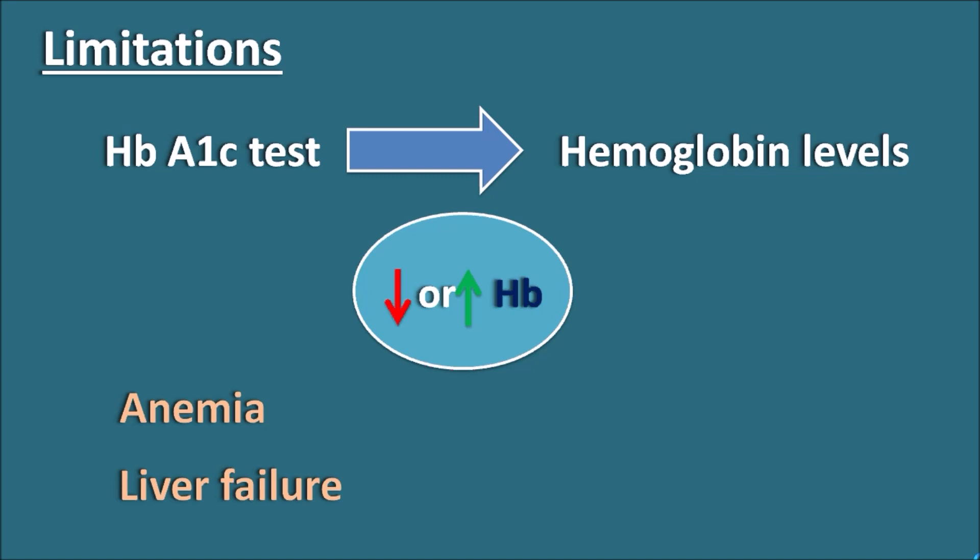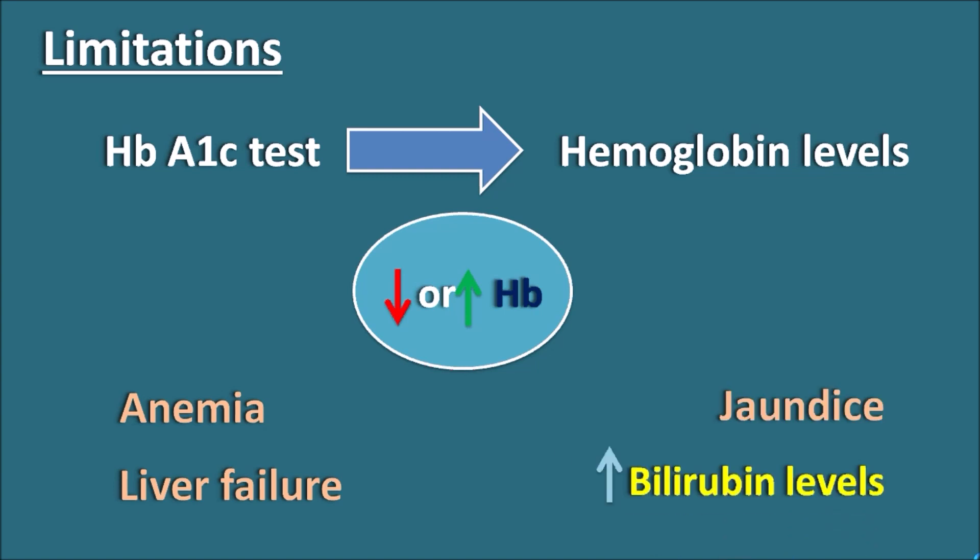Similarly, in conditions like jaundice where there are increased bilirubin levels, bilirubin can increase the HbA1c levels because it can also interact with glucose, thereby the total estimated glycated hemoglobin levels may be increased. So any of these factors may cause alteration of the HbA1c levels, which should be considered before going for the HbA1c test.